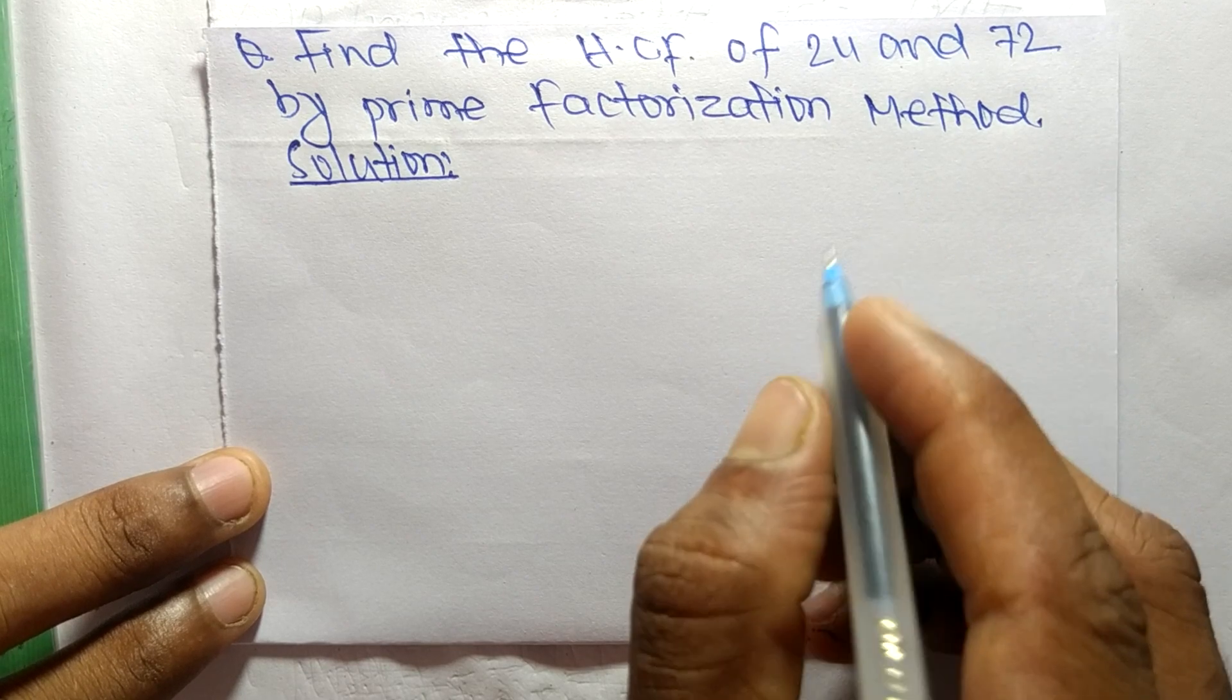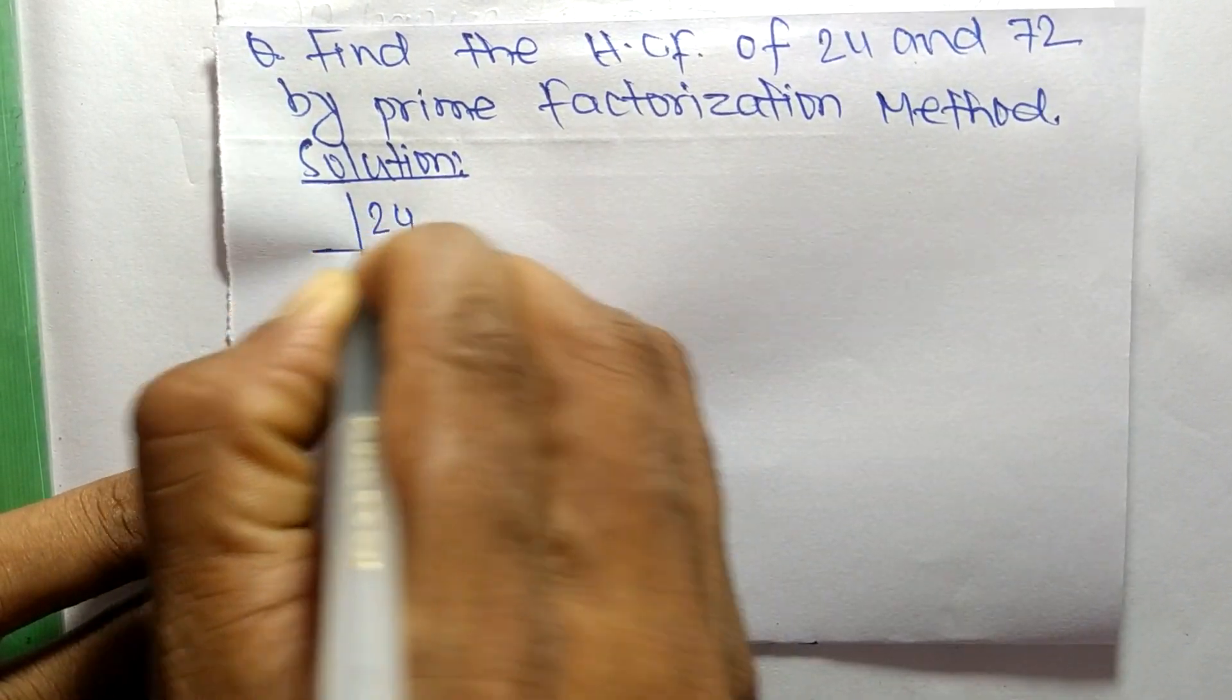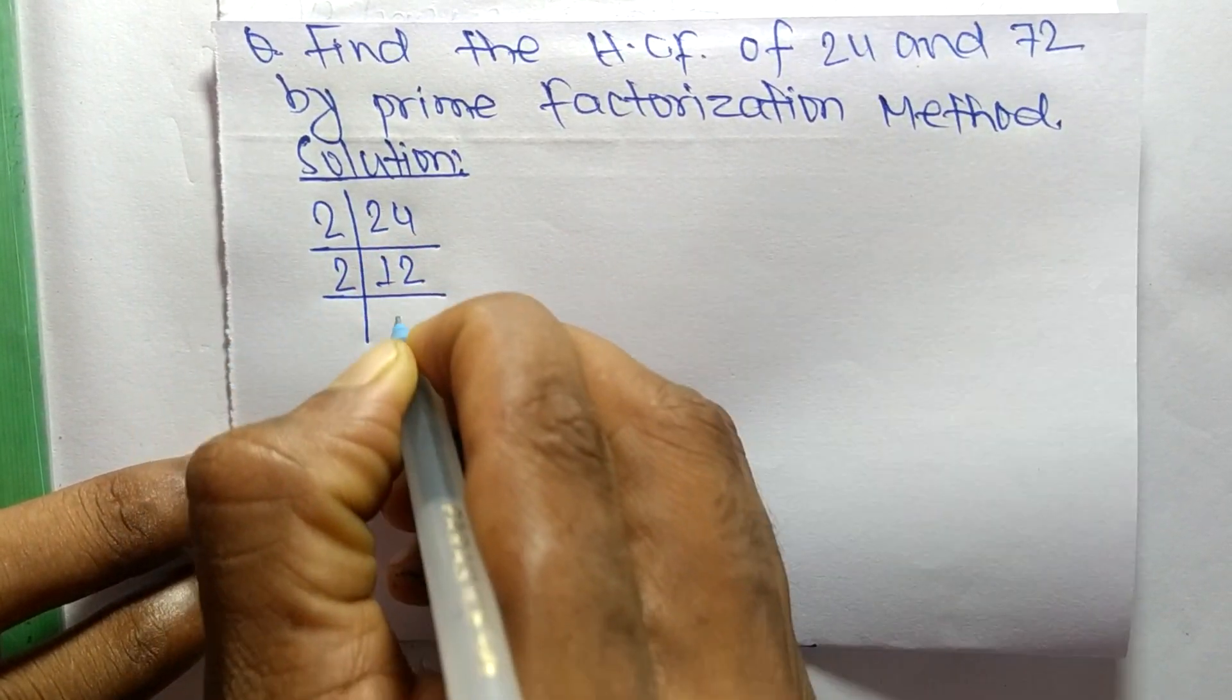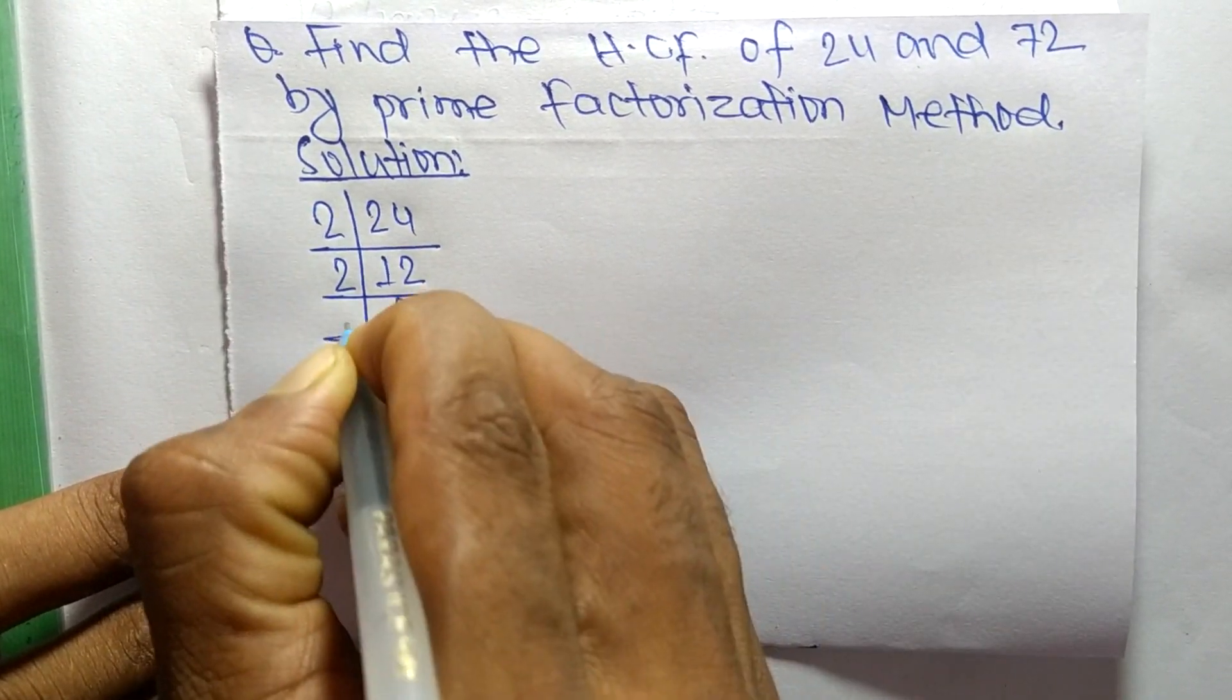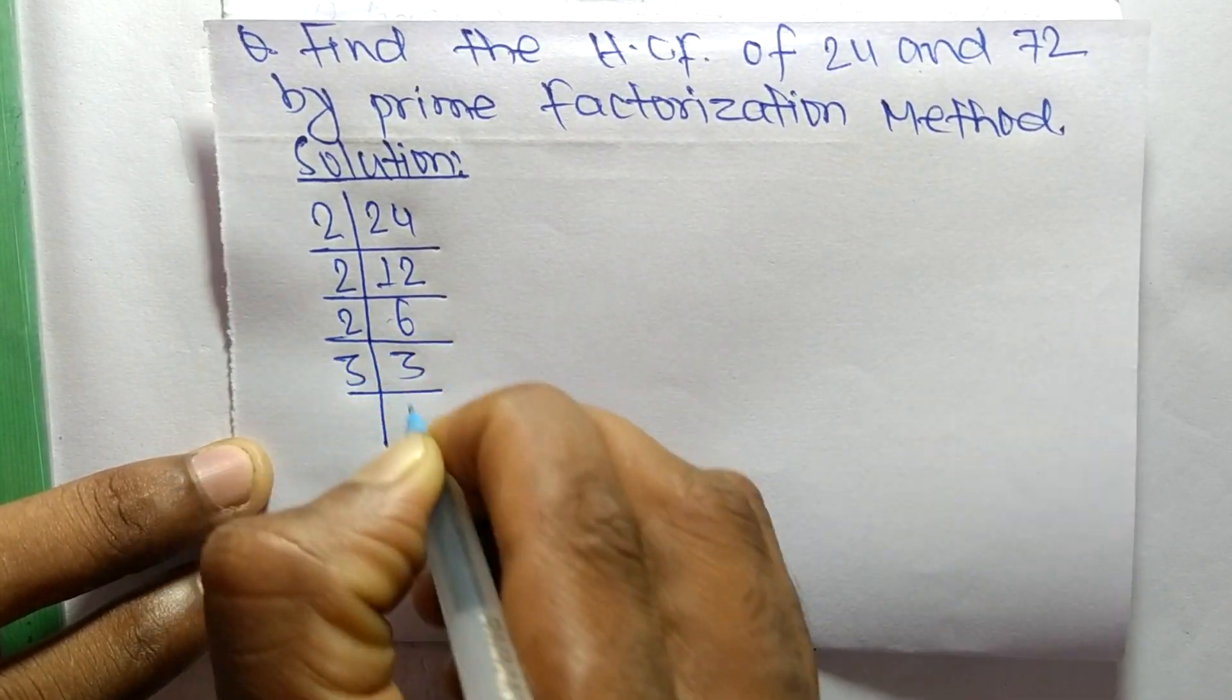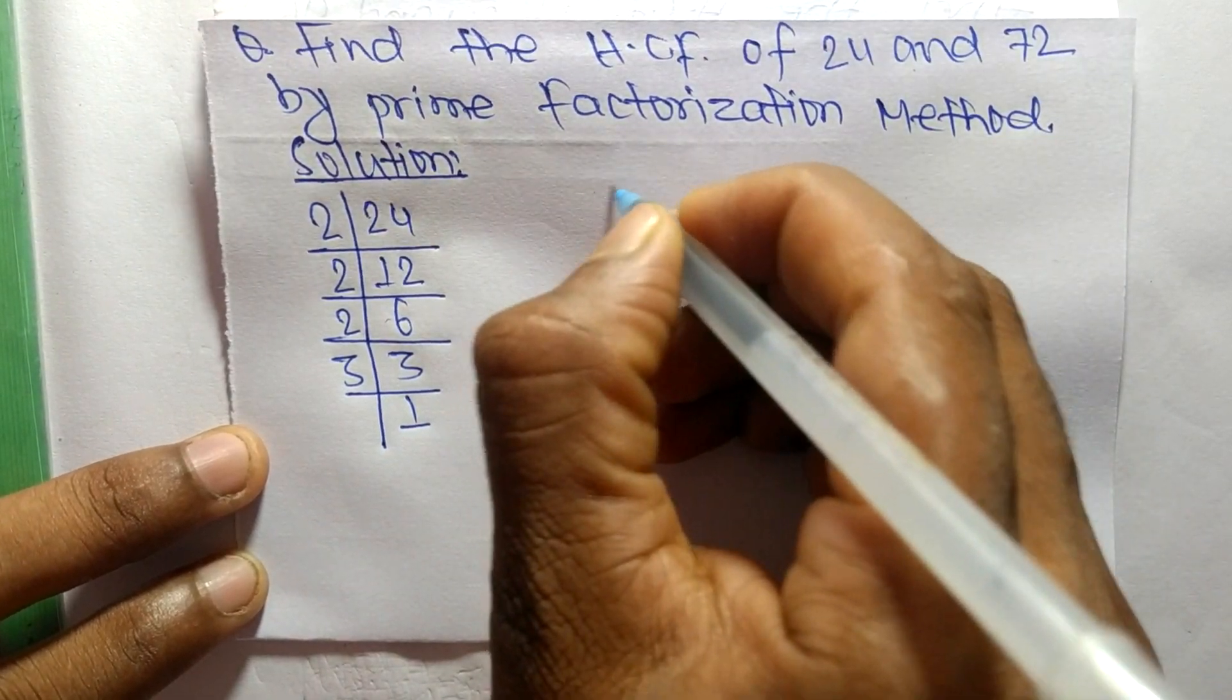First, we find the prime factors of 24. It is 2 times 12 equals 24, 2 times 6 equals 12, 2 times 3 equals 6, and 3 times 1 equals 3.